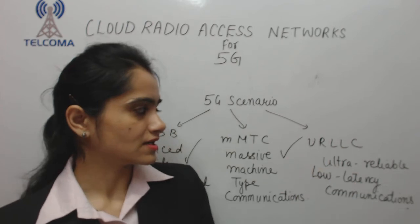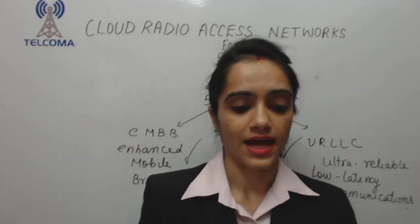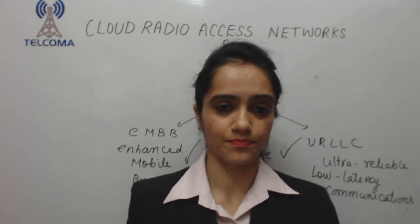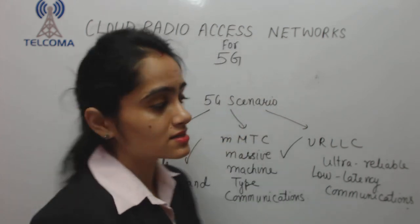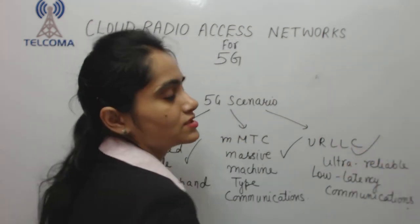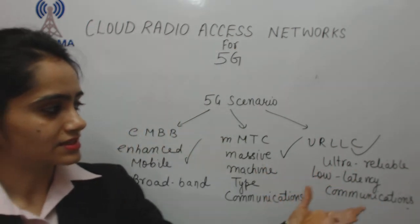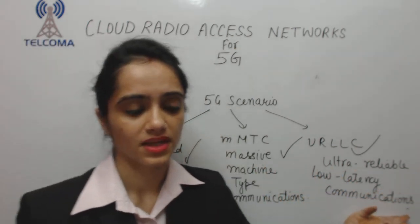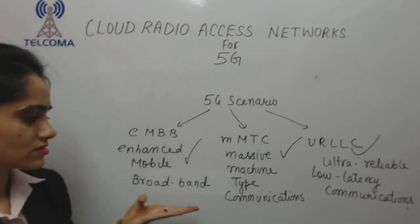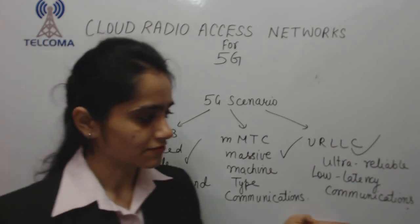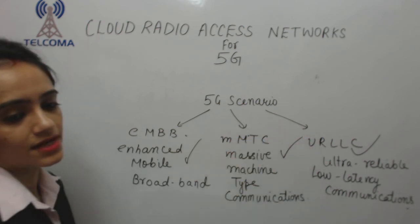Ultra Reliable Low Latency Communication is required for remote machinery and intelligent transportation systems, which require low latency and high reliability as its key features. Applications requiring low latency and high reliability fall under URLLC, which also demands latency, security, and mobile broadband capabilities. This completes the ITU's three 5G scenarios.